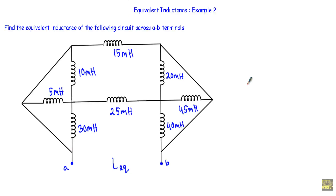In this video I will show you another example of equivalent inductance. Here I will show you how to calculate the equivalent inductance of the given circuit. Find the equivalent inductance of the following circuit across A and B terminals. This is our A terminal and this is our B terminal, and we have to calculate the equivalent inductance from this terminal to this terminal.